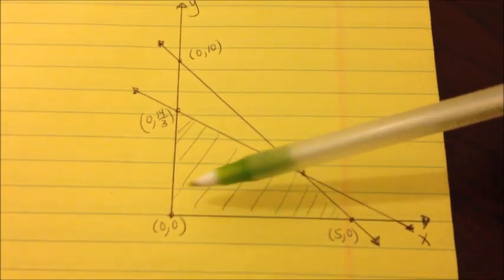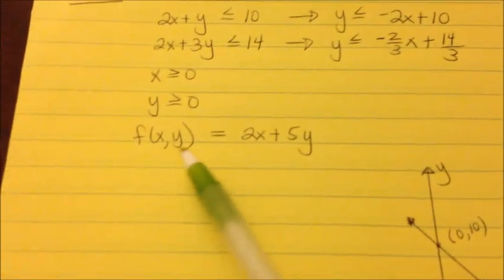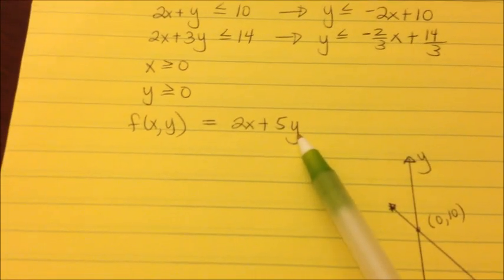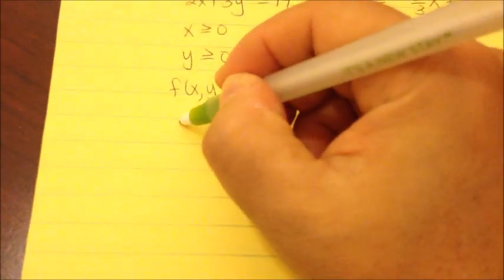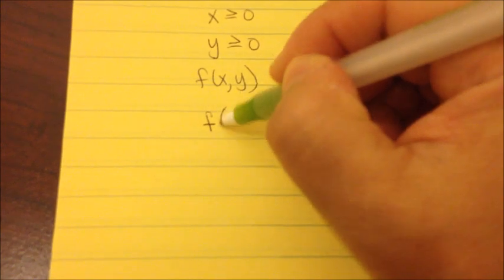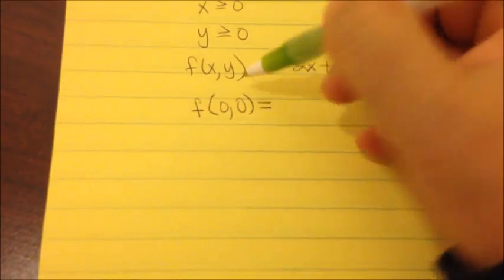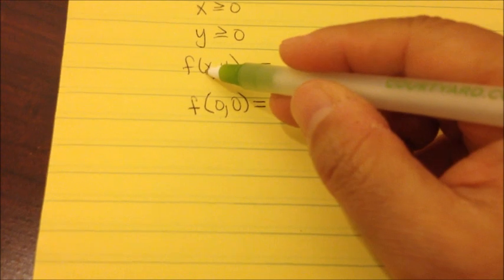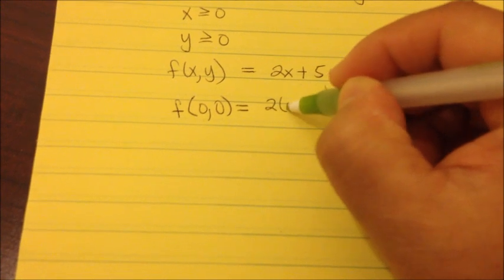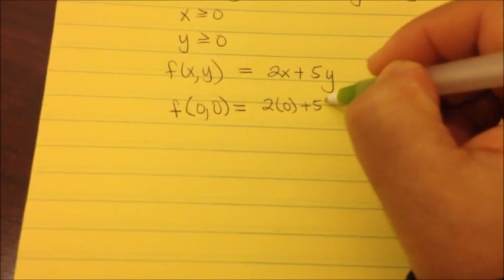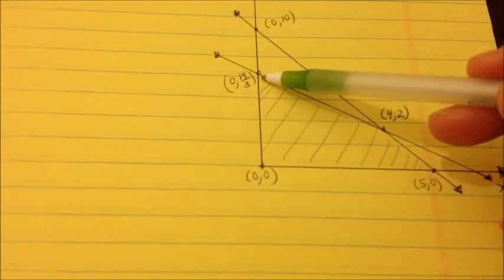Now, using all four corner points, we substitute into the objective function f(x, y). For the point (0, 0): f(0, 0) = 2(0) + 5(0) = 0. For the point (0, 14/3): f(0, 14/3) = 2(0) + 5(14/3).